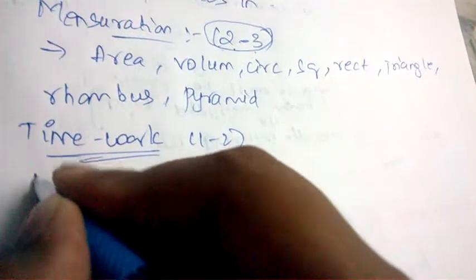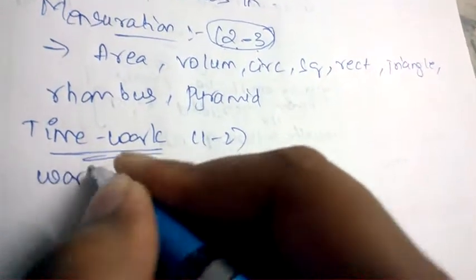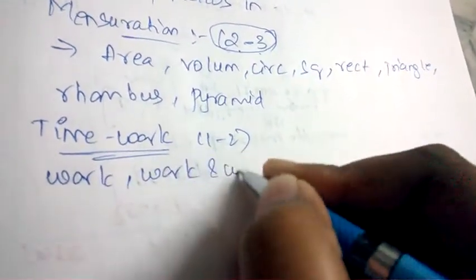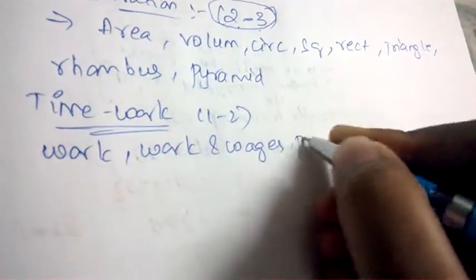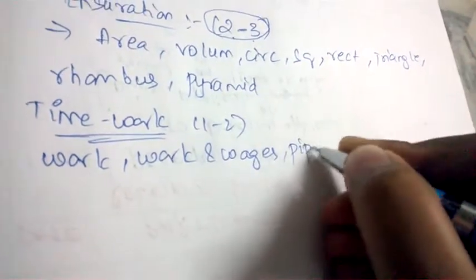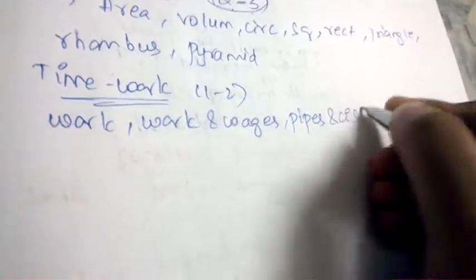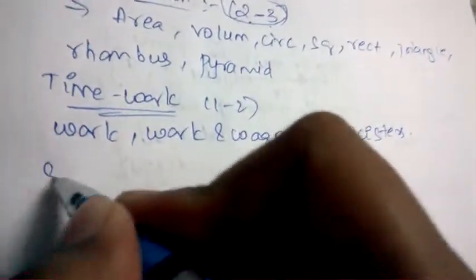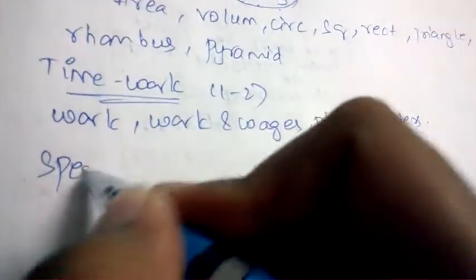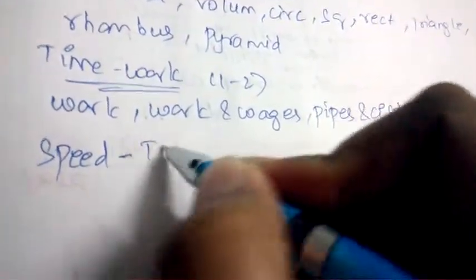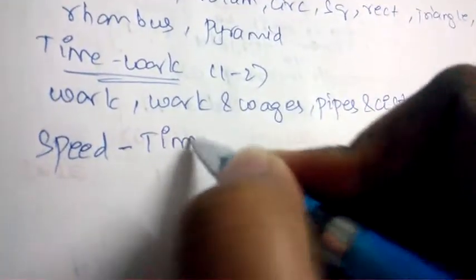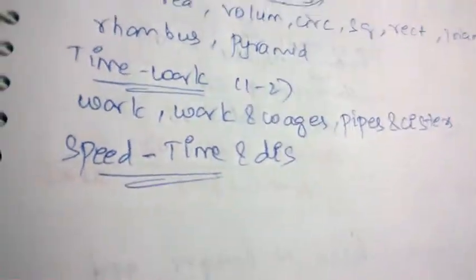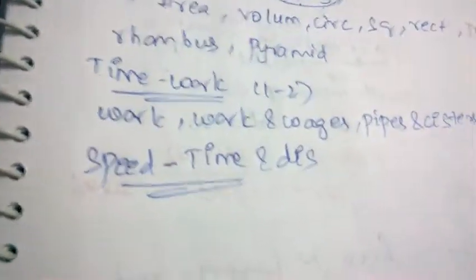Next, they'll be asking about Time and Work — the weightage is 2 to 3 marks. The topics are work efficiency, work and wages, and pipes and cisterns.